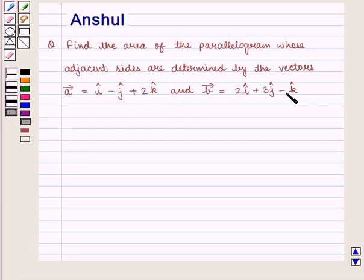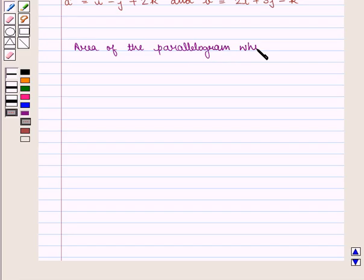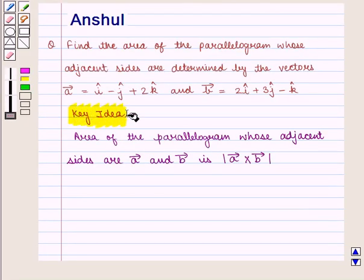We know that the area of the parallelogram whose adjacent sides are given by vector A and vector B is equal to the modulus of vector A cross vector B. With this key idea, let us proceed with the solution.